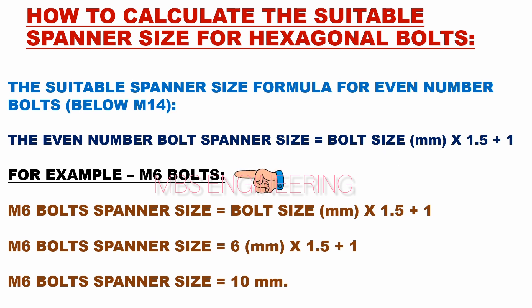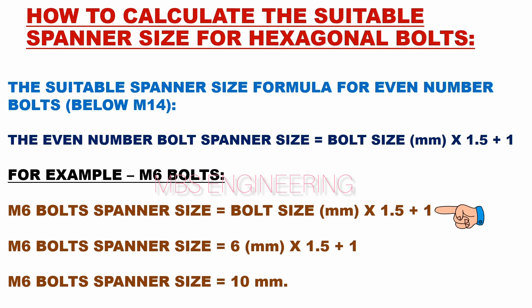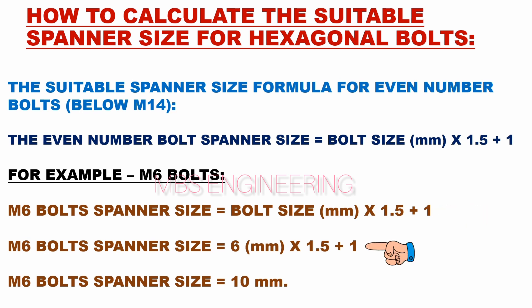We will understand the sample calculation for M6 bolts. The M6 bolt spanner size equals bolt size in mm multiplied by 1.5 plus 1, which equals 10 mm.